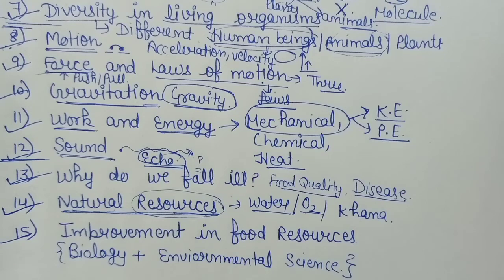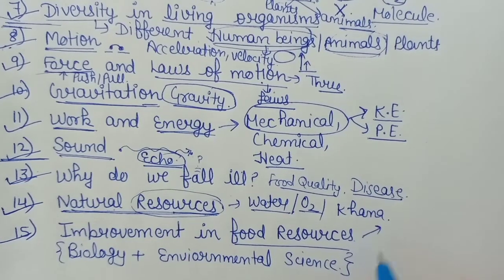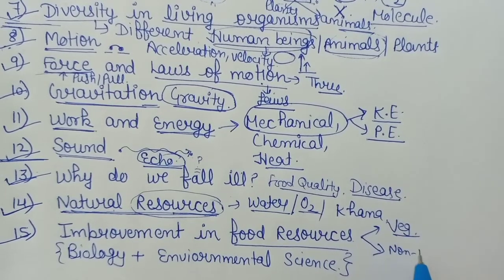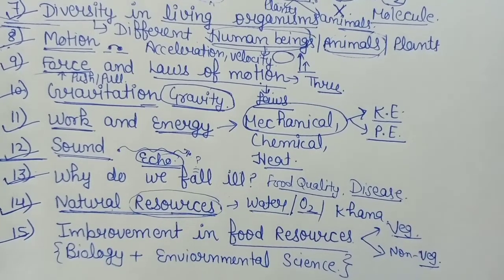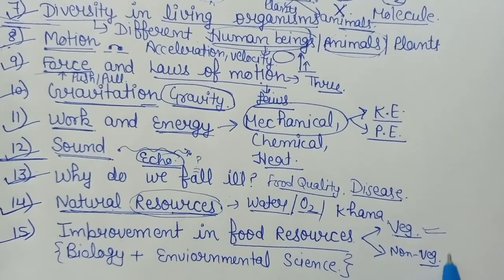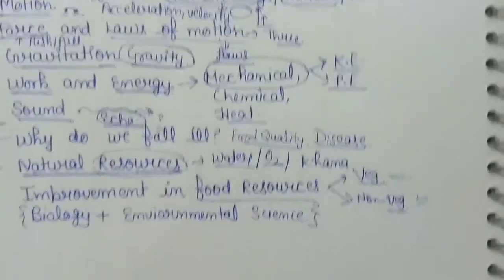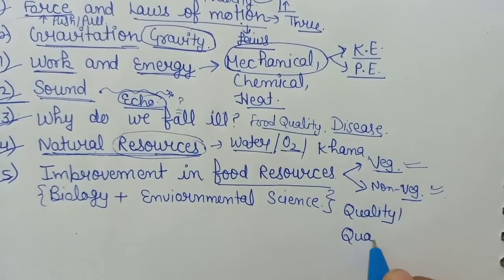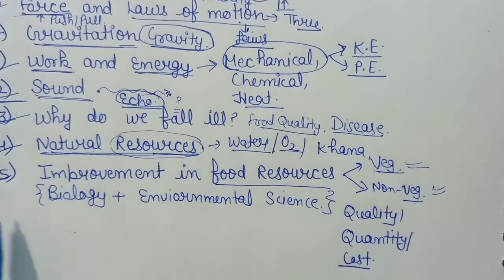After that, the last chapter — chapter number 15 — Improvement in Food Resources. Food resources में improvement कैसे की जा सकती है? We have two types of people — vegetarian and non-vegetarian. तो vegetarian food को कैसे improve करें, non-vegetarian food को कैसे improve करें — मतलब कैसे उनकी quality increase करेंगे, quantity increase करेंगे, और cost reduce होगी — यह सब हम पढ़ेंगे in chapter number 15.